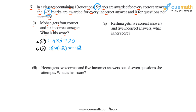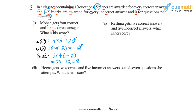So how many marks will Mohan get in total? We simply have to add these two scores: 20 and minus 12. So Mohan's total score will be 20 plus minus 12, which is equal to 20 minus 12, or 8. So that's Mohan's total score.